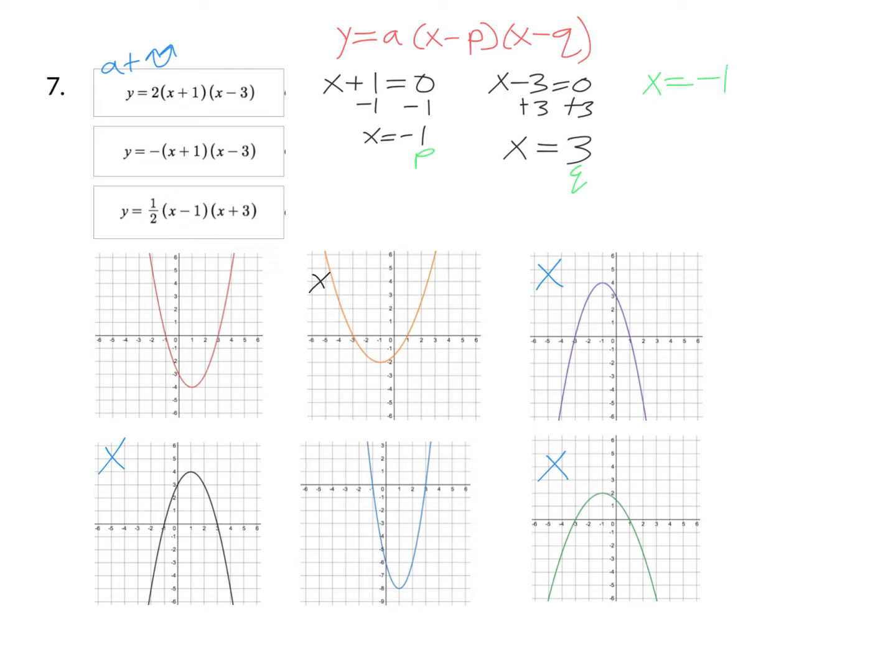So we have negative one plus three divided by two. That's two divided by two which is one. That means the x coordinate of the vertex has to be one which both of them have. Now find the y.